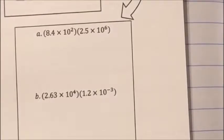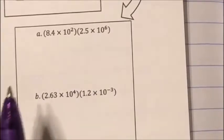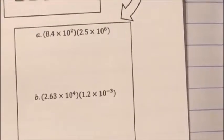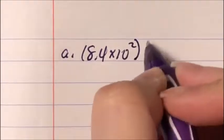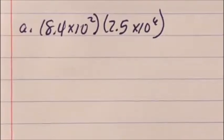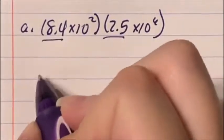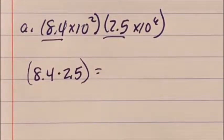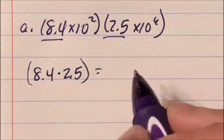Now let's go over the try-it answers together. Letter A: 8.4×10² times 2.5×10⁶. I take 8.4 times 2.5, which equals 21. Then for the powers: 10² times 10⁶, using Power of Powers that's 10 to the 2+6, which is 10⁸.